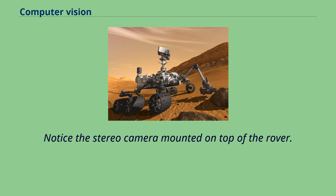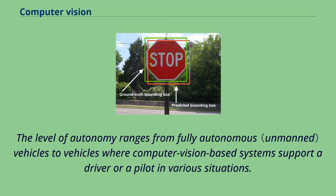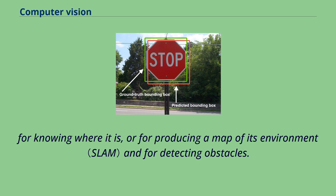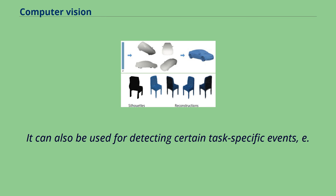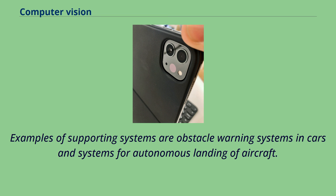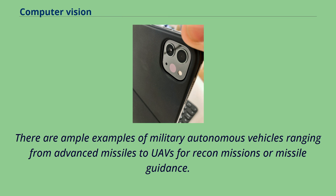One of the newer application areas is autonomous vehicles, which include submersibles, land-based vehicles, aerial vehicles, and unmanned aerial vehicles. The level of autonomy ranges from fully autonomous vehicles to vehicles where computer vision-based systems support a driver or a pilot in various situations. Fully autonomous vehicles typically use computer vision for navigation — for knowing where it is, producing a map of its environment, and for detecting obstacles. It can also be used for detecting certain task-specific events, such as a UAV looking for forest fires. Examples of supporting systems are obstacle warning systems in cars and systems for autonomous landing of aircraft. Several car manufacturers have demonstrated systems for autonomous driving, and there are military autonomous vehicles ranging from advanced missiles to UAVs for recon missions.